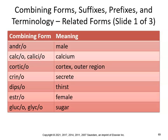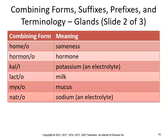Crin means secrete — an endocrinologist is a specialist in diagnosis and treatment of endocrine gland disorders. Dips means thirst, so polydipsia is a condition of excessive thirst. Estro means female — estrogenic means pertaining to having properties similar to estrogen. Gluco or glyco means sugar — glucagon is a hormone from the pancreas that causes sugar to be released into the bloodstream when blood sugar levels are low. Homeo means same — remember homeostasis, meaning a state of equilibrium. Hormonal means pertaining to hormones.